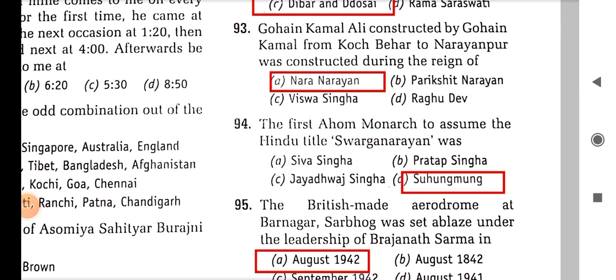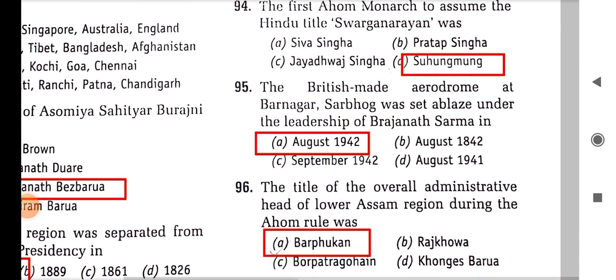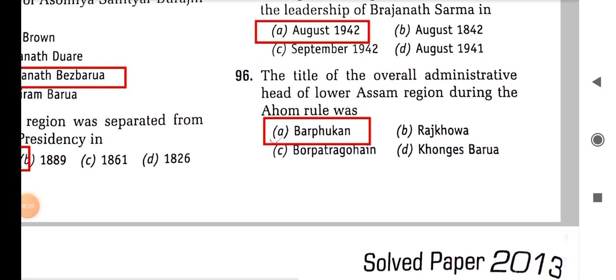The first Ahom monarch to assume the Hindu title Swarganarayana was Suhungmung. The British aerodrome at Barnagar, Sarbhog, was set ablaze under the leadership of Bajanath Sharma in August 1942. The title of the overall administrative head of the lower Assam region during Ahom rule was Barphukan.